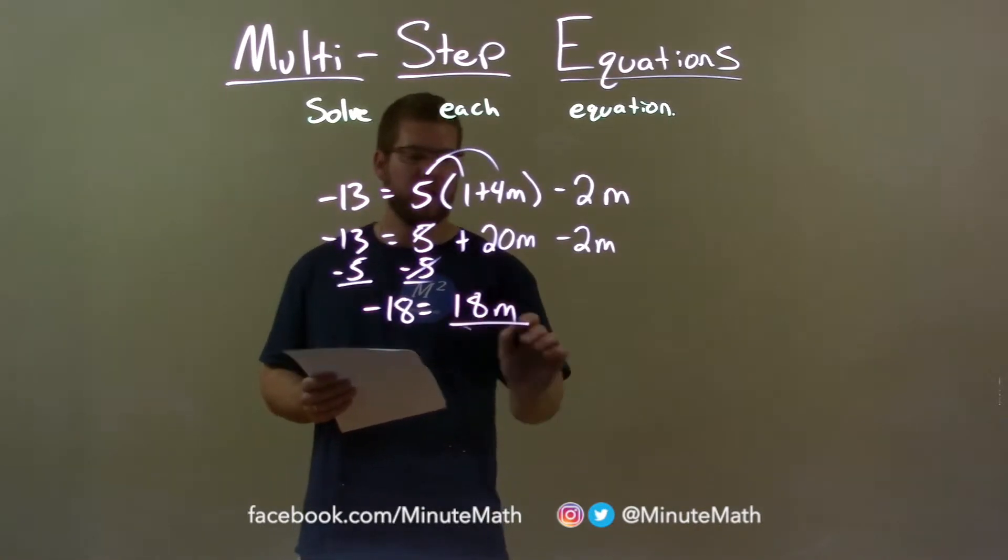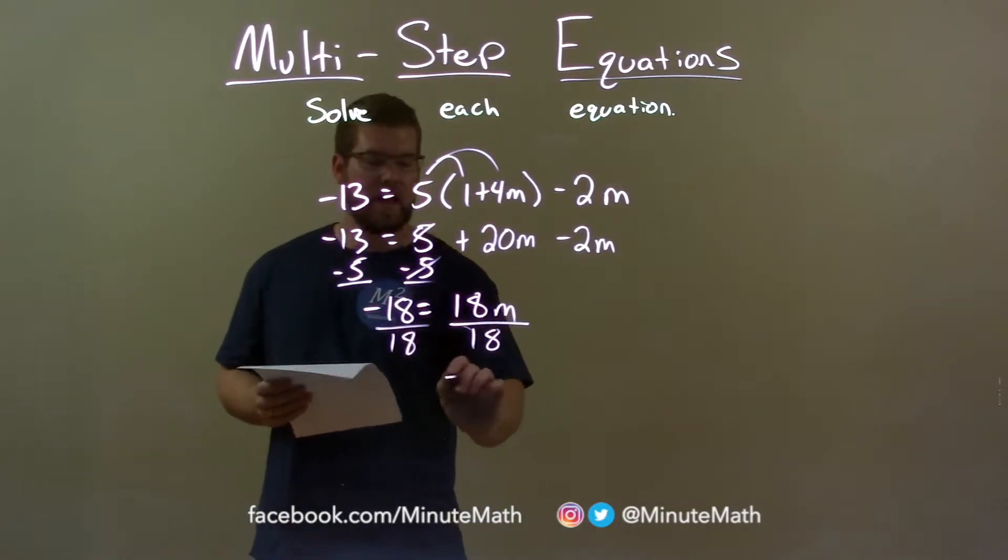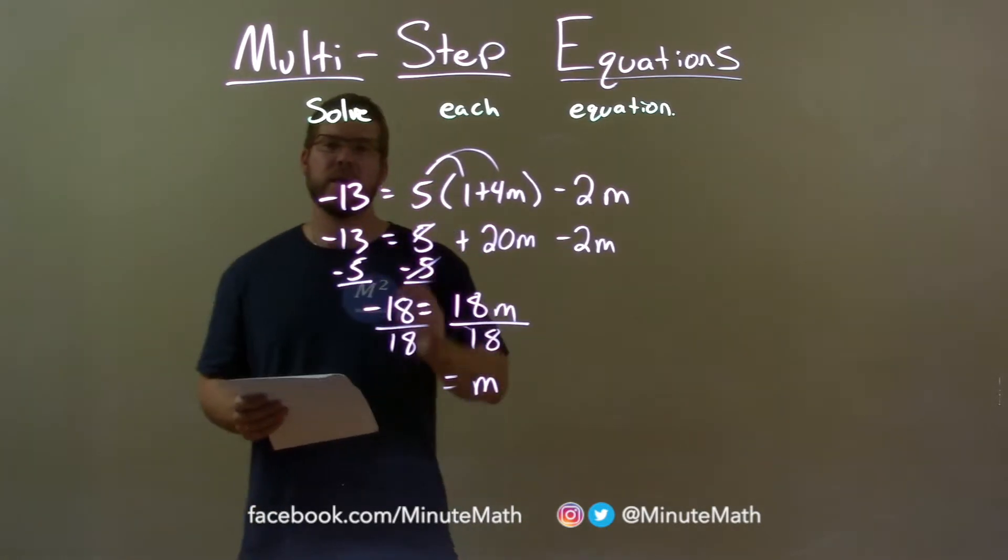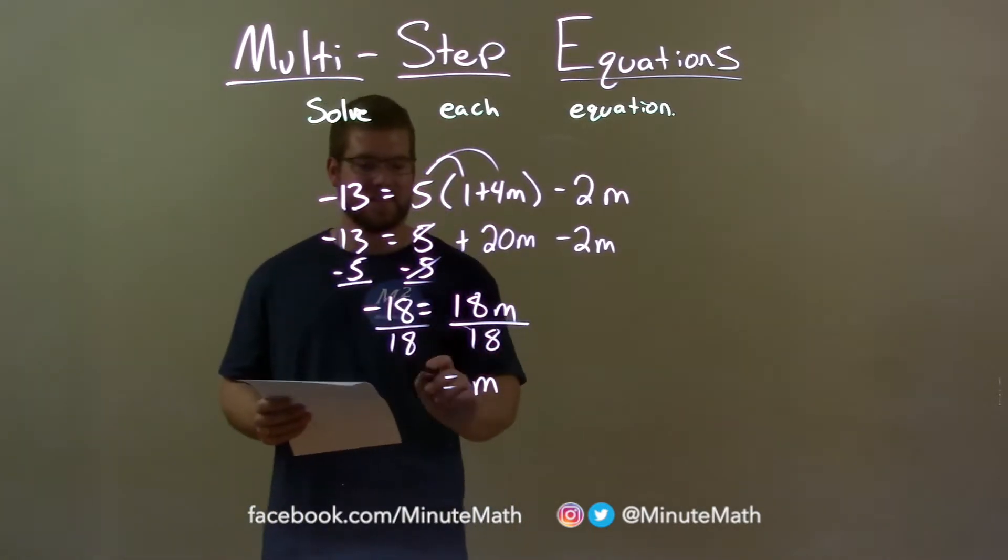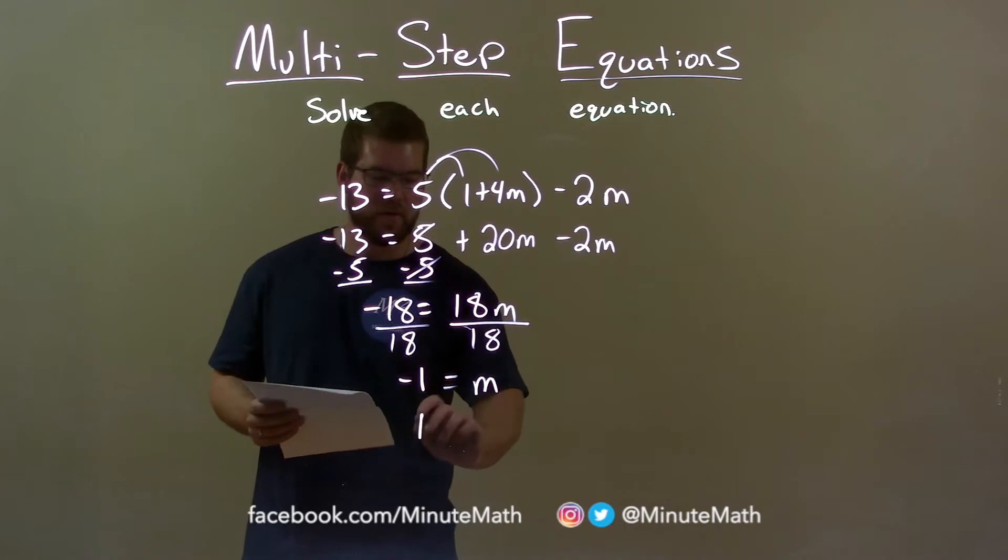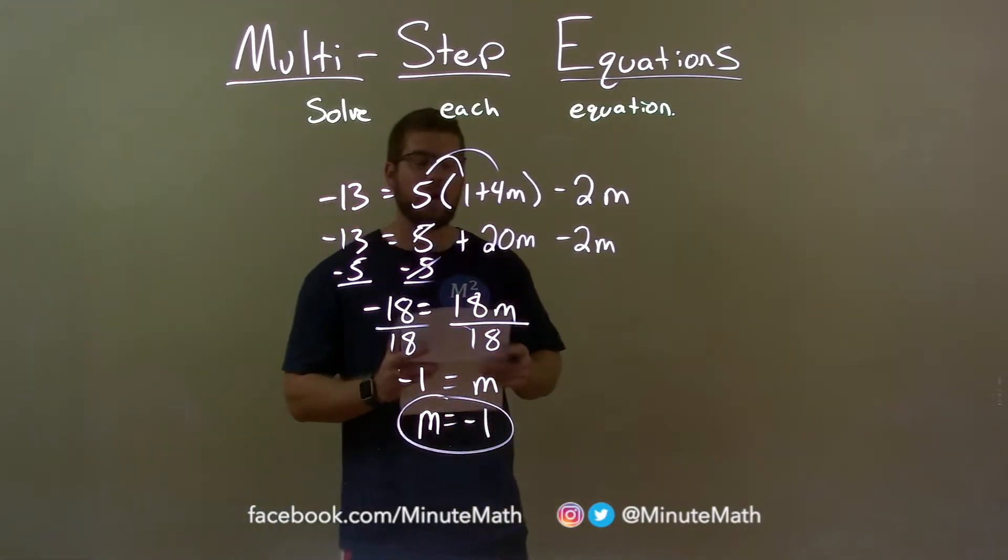Now, if I divide both sides by 18, m becomes by itself. Negative 18 divided by positive 18 is negative 1. We rewrite this to have m come first, so m equals negative 1 and then we have our final answer.